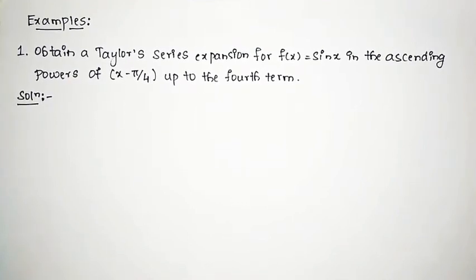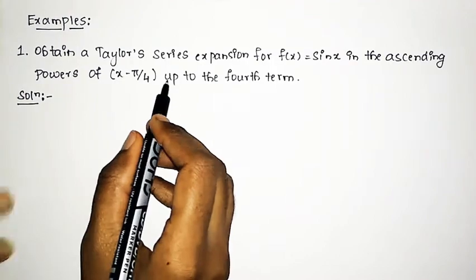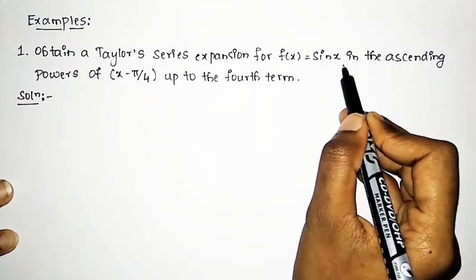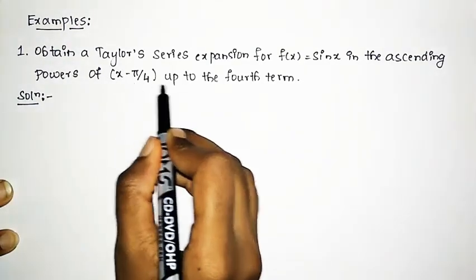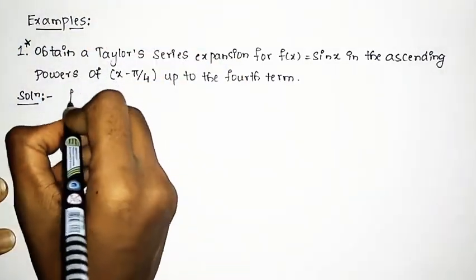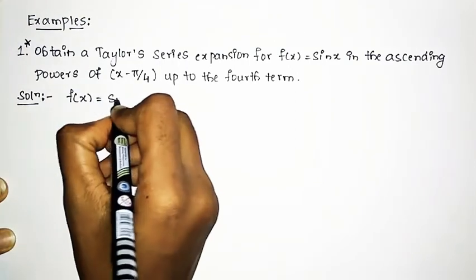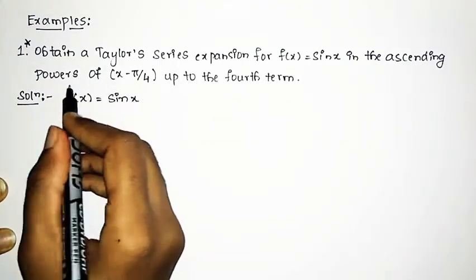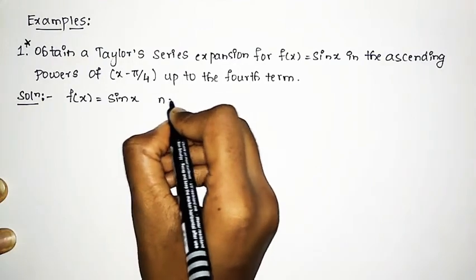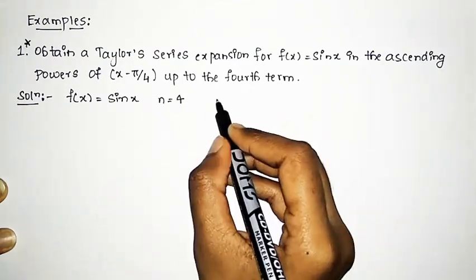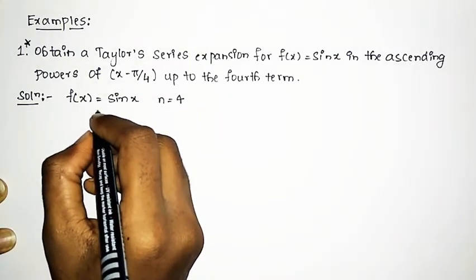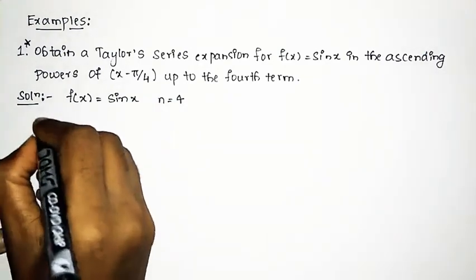Welcome to our channel. Today we shall discuss examples of Taylor series. The example is: obtain a Taylor series expansion for f(x) = sin(x) in ascending powers of (x - π/4) up to the fourth term. This is one of the important examples. Here the fourth term means n = 4, so we need to find the Taylor series expansion up to the fourth term in powers of (x - π/4).